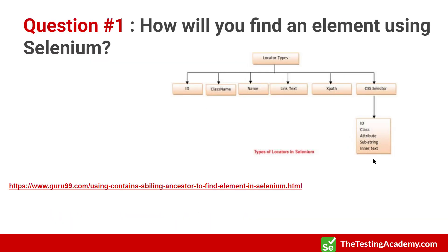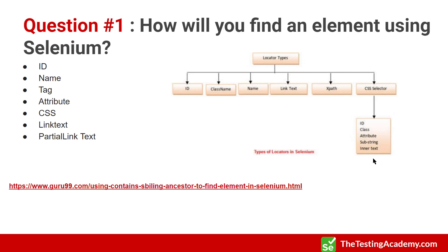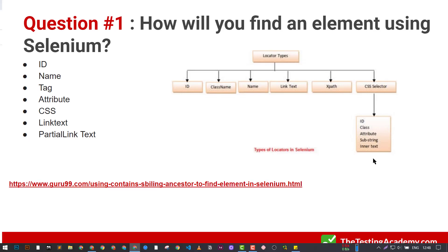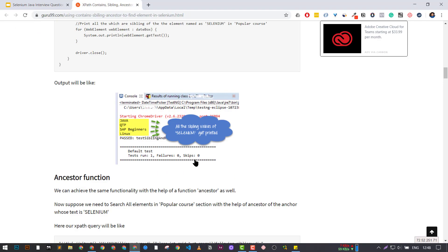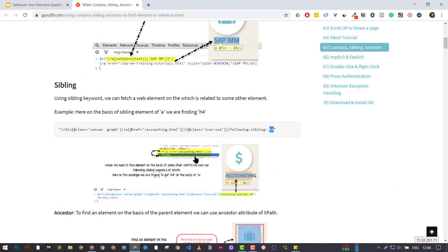The first question is an important one: what are the different types of locator strategies in Selenium? We have ID, name, class, attribute, CSS, and partial link and link. Most of the time people already know about these — the ID, class things. But the important point here is especially the ancestor or sibling part.